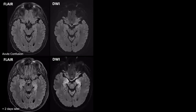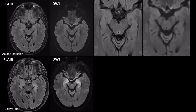The patient received another MRI two days later because the confusion just got worse and the patient also suffered a first-time seizure. On the FLAIR images, we now see that both hippocampi as well as the uncus are swollen and hyperintense, also associated with a high signal on diffusion-weighted images. This was diffusion restriction — dark on the ADC map.